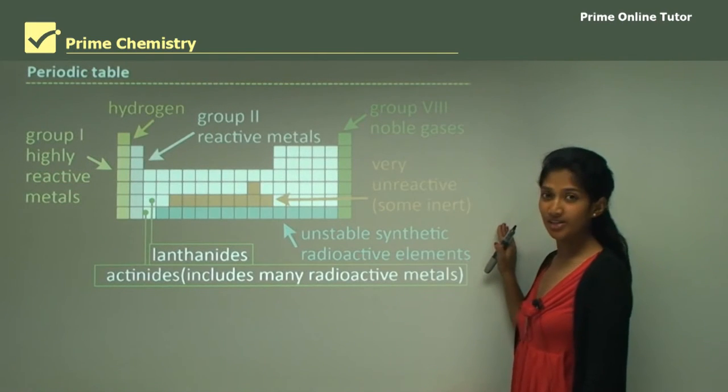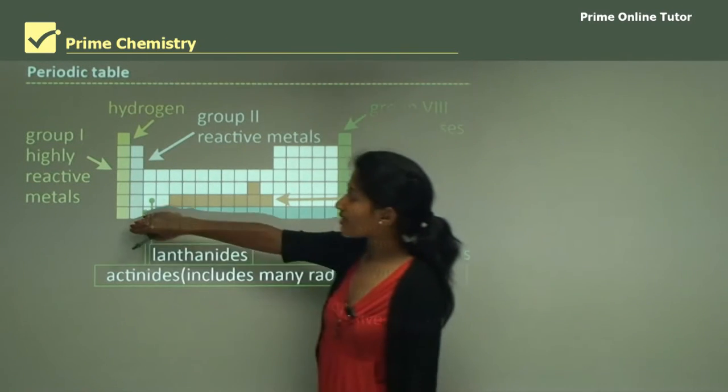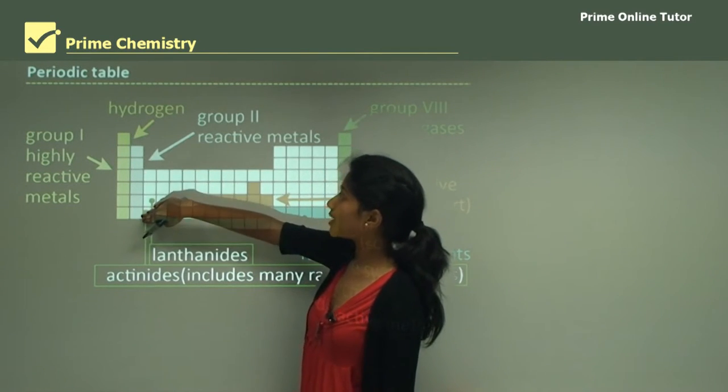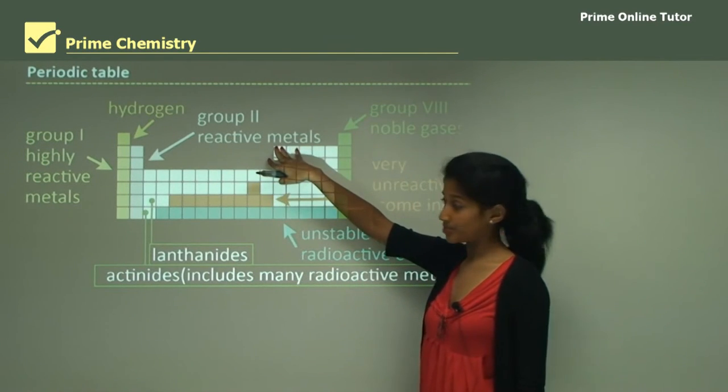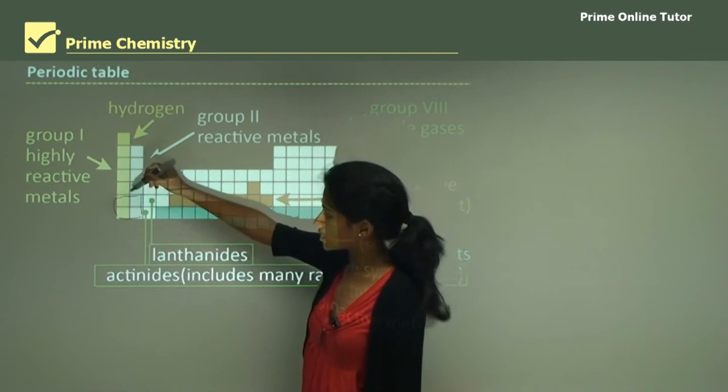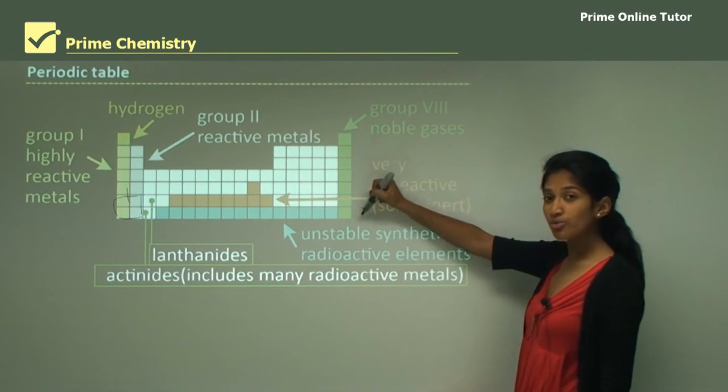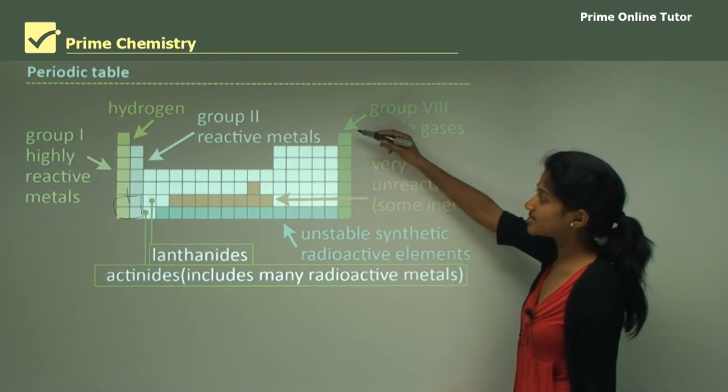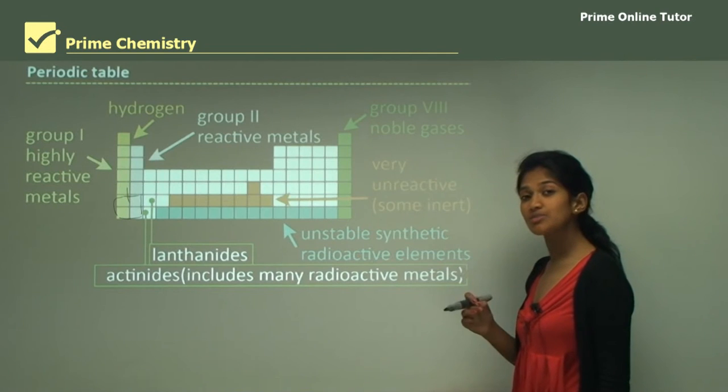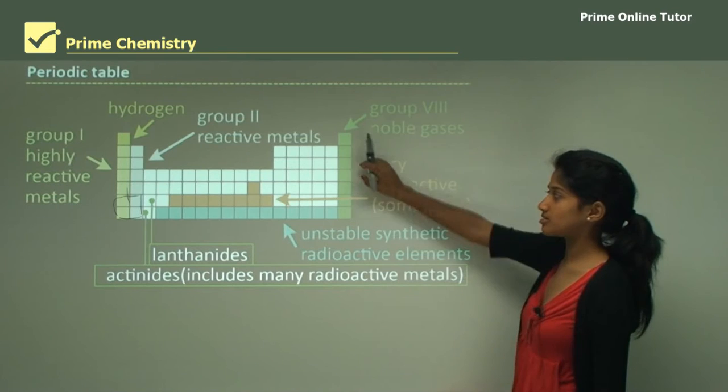Now let's take a look at the periodic table. Here we have our group 1 elements which are highly reactive. Then you move to your group 2 elements, again quite reactive metals, and around here you would find the very most reactive metal. And then we have our group 8 elements which are the noble gases. These are non-metals and gases, they are inert. They do not react at all and this is because they have a full valence shell. A full last shell so it doesn't need to react.